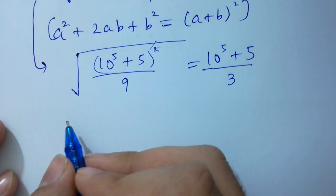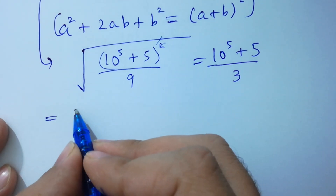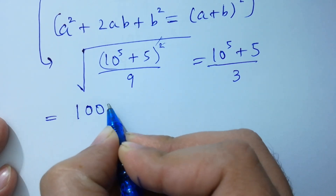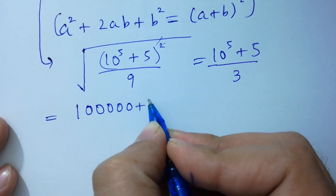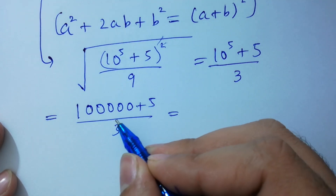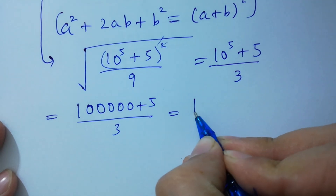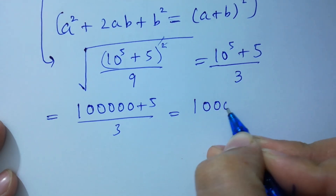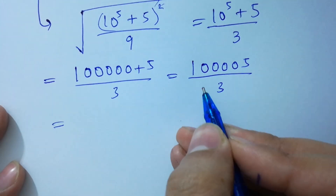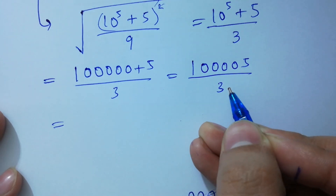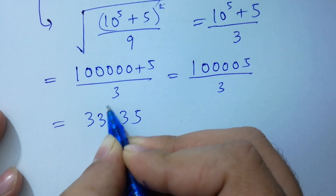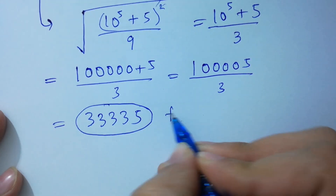Square root of 9 will be 3. Next: 10 to the power 5 is the same as 1, 5 times 0, 1, 2, 3, 4, 5. So plus 5 over 3. And here 1, 5 times 0, plus 5, is equal to 1, 4 times 0, 1, 2, 3, 4, 5, as it is over 3. And here 1, 4 times 5 over 3 is equal to finally 4 times 35, which is our final answer.